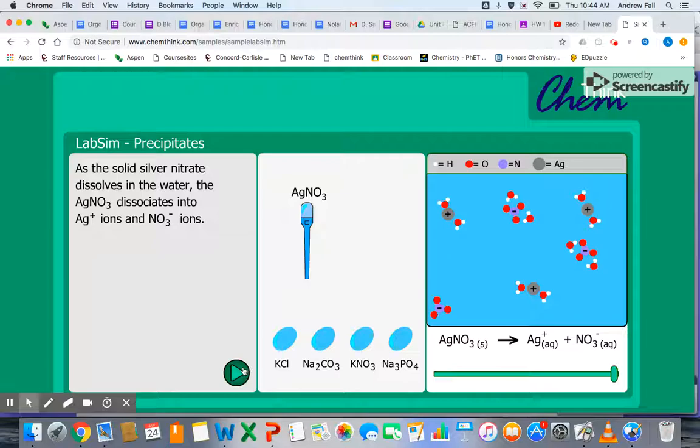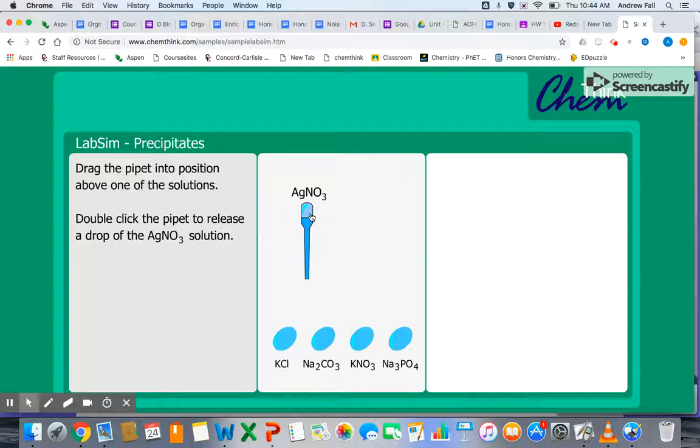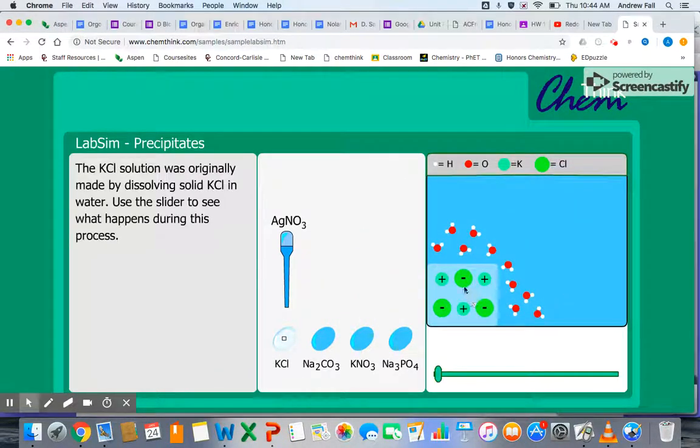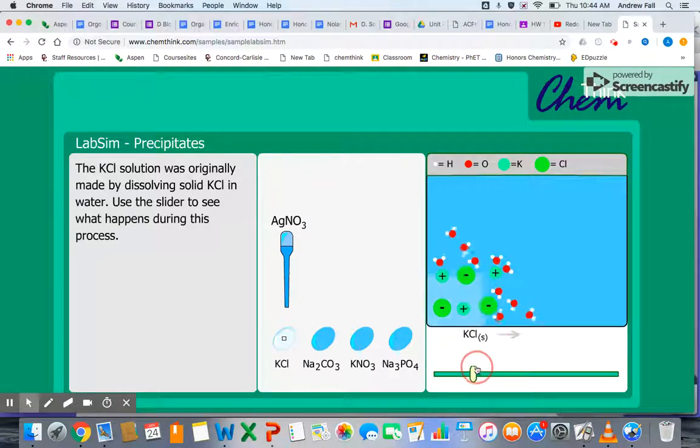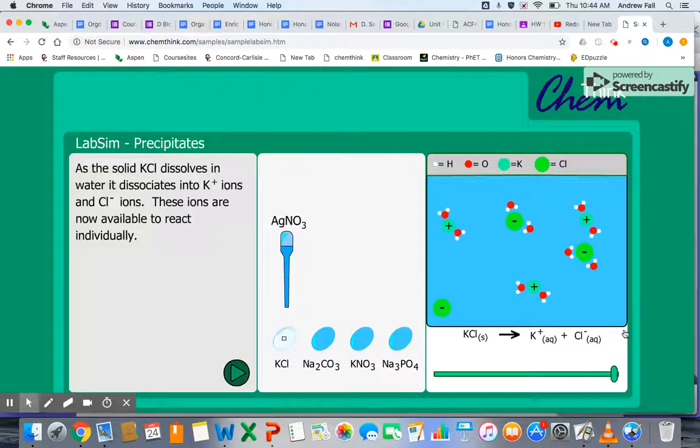Then we'll take a look at the sample we're going to mix this with. So the first sample we're going to mix this with is the potassium chloride. So potassium chloride, much like the silver nitrate, is an ionic compound that's dissolved forming a solution. Again, the positive potassium ions are surrounded by the oxygen ends of water and the chloride anions are surrounded by the hydrogens of water.